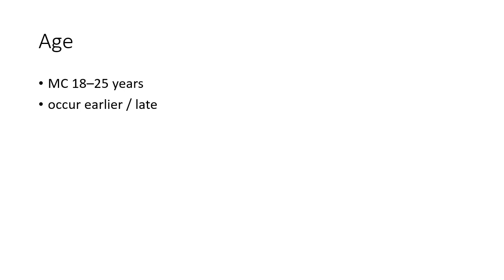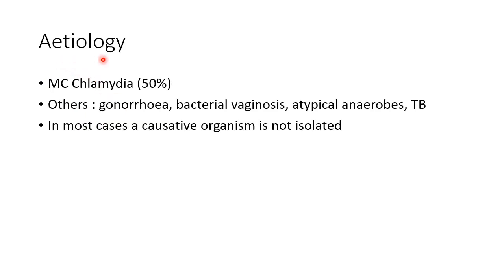Pelvic Inflammatory Disease is most common in women between 18 to 25 years of age, though it can occur earlier or later. The most common organism causing PID is Chlamydia, accounting for almost 50% of cases. Other organisms include Gonorrhea, Bacterial Vaginosis, atypical anaerobes, and Tuberculosis.